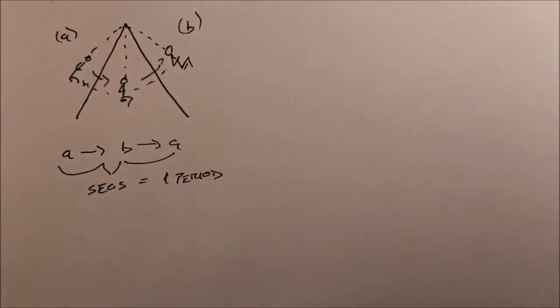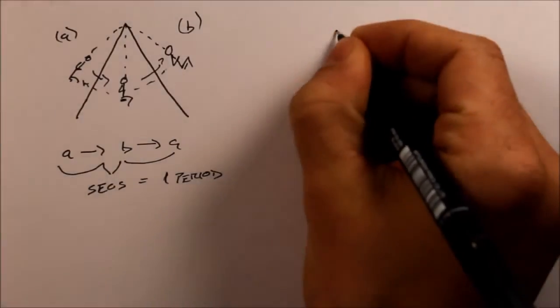Now there's a term which is very similar to period, which is frequency. So frequency is simply the inverse of period. So if period is the time it takes to complete one cycle, frequency is the number of cycles that can be completed in one time.